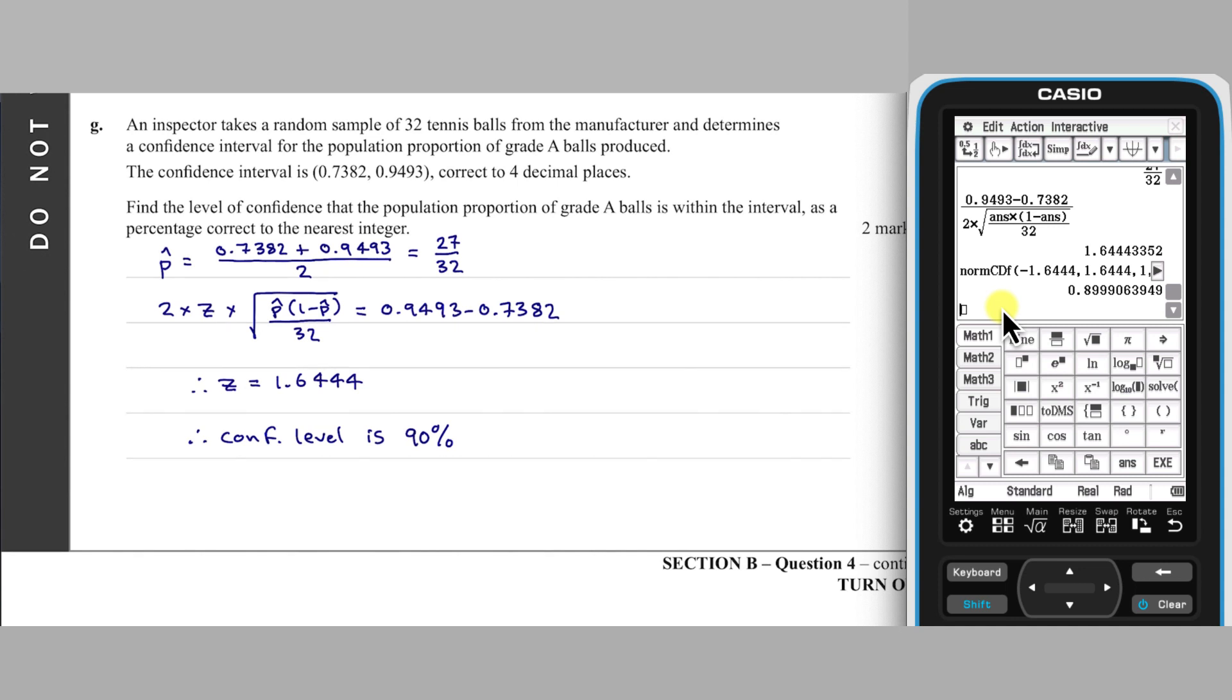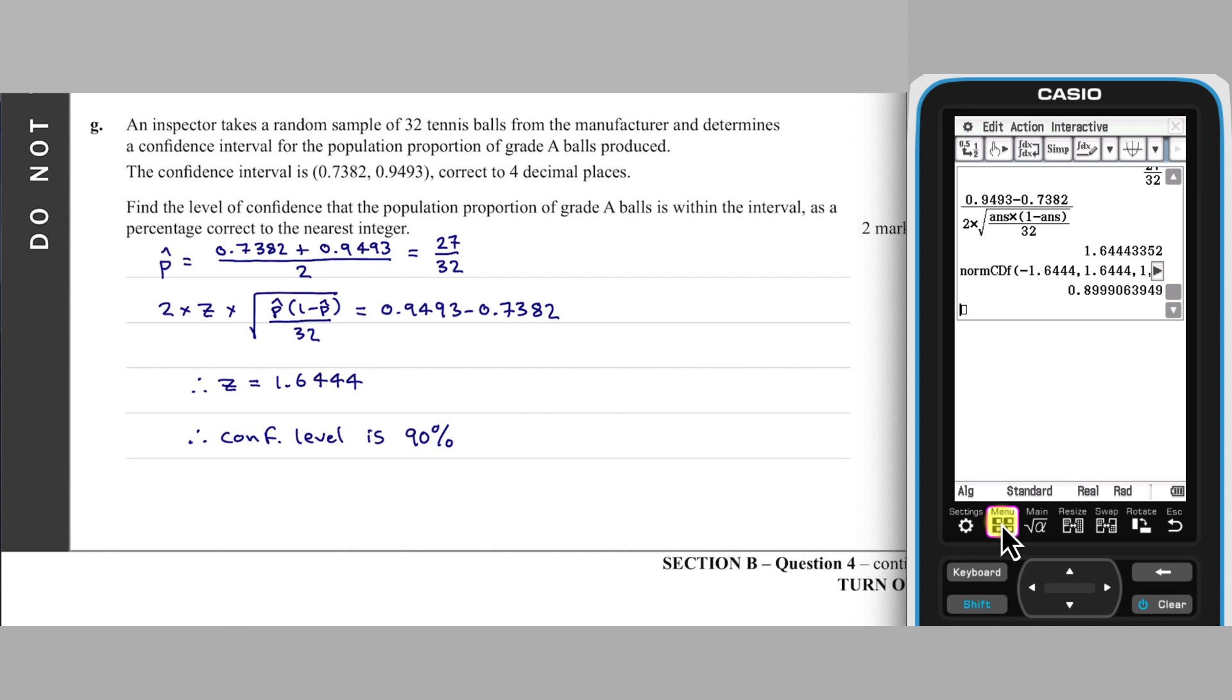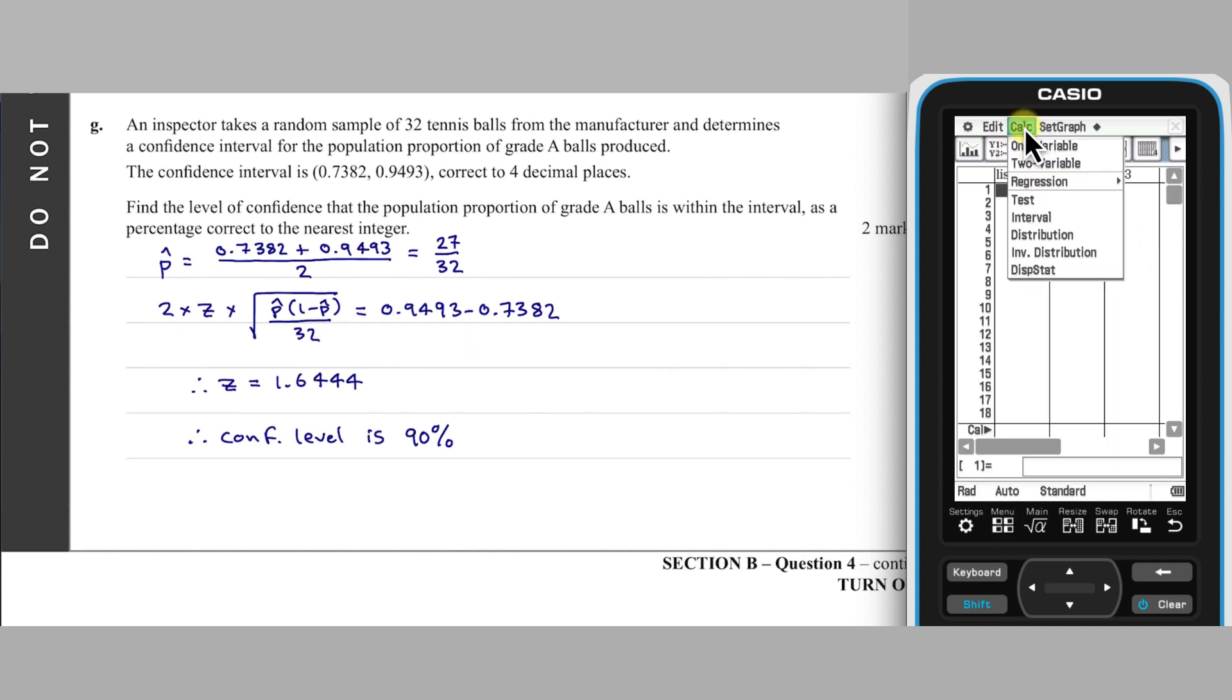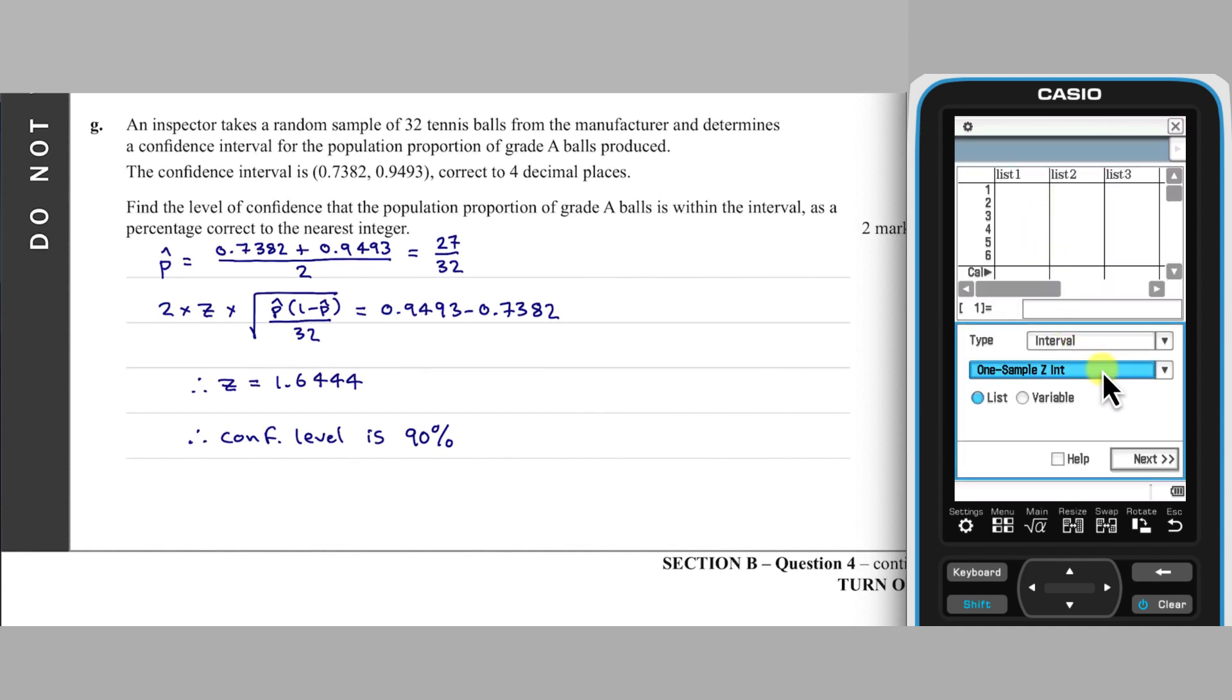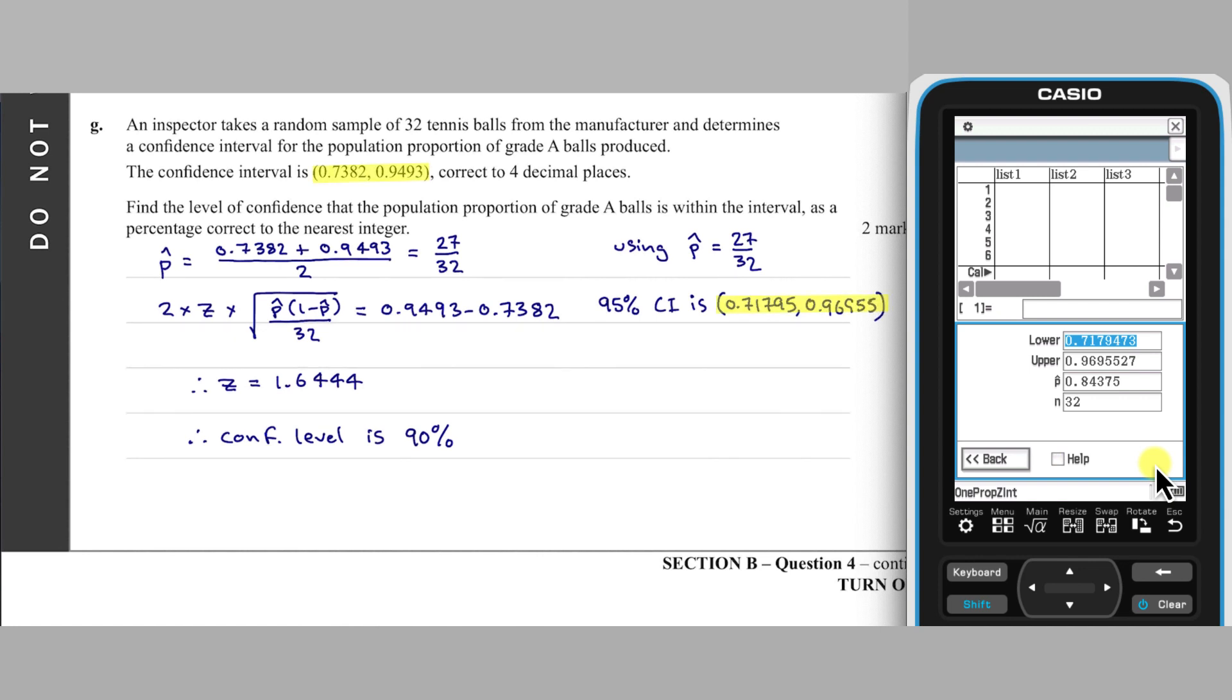An alternative method for solving this equation is trial and error. This is an appropriate technique, given the level of accuracy that is called for in this question. I'm going to perform the trial and error in Classpad's statistics app. Open the Calculate menu and choose Interval. In the pop-up, select a one proportion Z-interval. I'm going to start with a confidence level of 0.95. I'll need that P-hat value to enter an X value of 27 out of an N value of 35. This is narrower than the interval given, so the confidence level must be lower than 95%. Next, I'm going to try a confidence level of 0.90. That's the one we were given. So our confidence level is 90%.